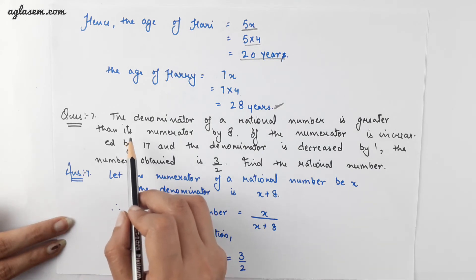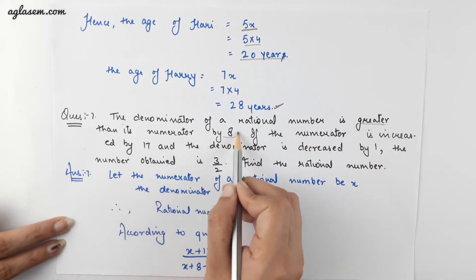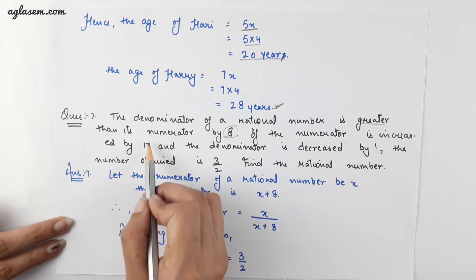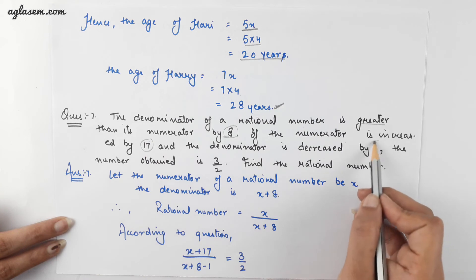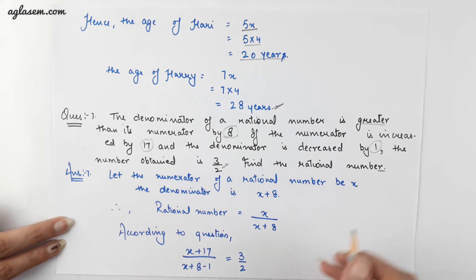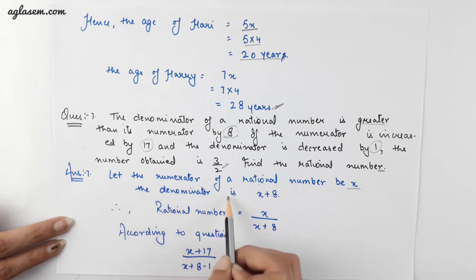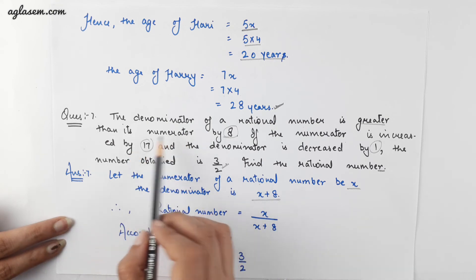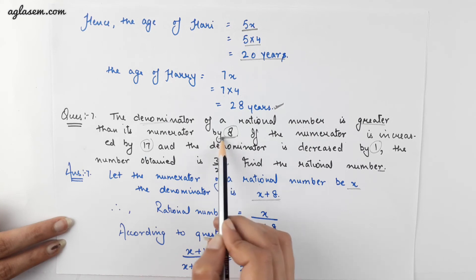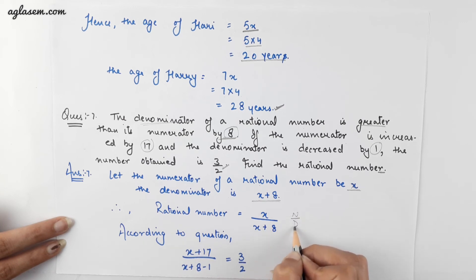Moving to question number 7: the denominator of a rational number is greater than its numerator by 8. If the numerator is increased by 17 and the denominator is decreased by 1, then the number obtained is 3 by 2. Find the rational number. We let the numerator be x and the denominator be x plus 8. Therefore the rational number is x upon (x plus 8).